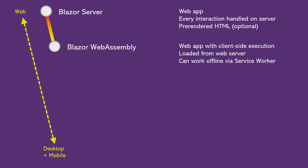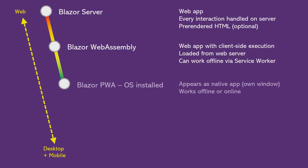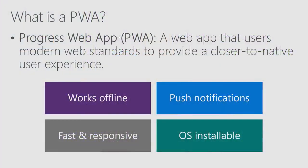So that's Blazor WebAssembly. Now we can use some of the more modern web standards in our Blazor WebAssembly app to make it even more native-like. Apps like this are typically called Progressive Web Apps, or PWAs. A PWA is just a web app, but it uses modern web standards to enable things like offline support — you add a service worker so that files can be cached and used even when the browser is not connected — support for push notifications, and PWAs are fast and responsive, so they have that native app-like feel. On some platforms they can even be OS-installable: you can pin them to your home screen on your phone, or on Windows 10 you can install them to run from your start menu. So we can take our Blazor WebAssembly app and turn it into a PWA.